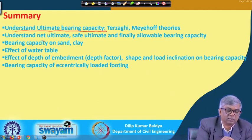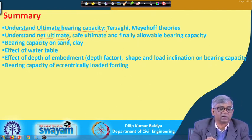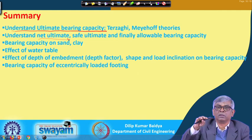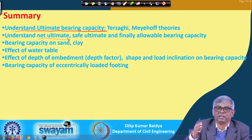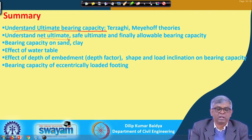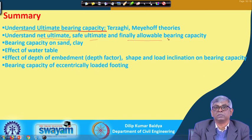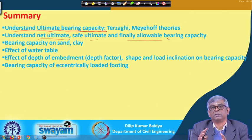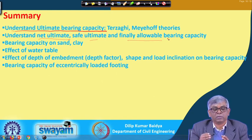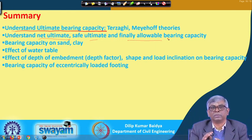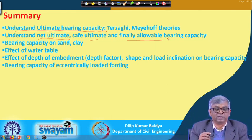You should learn the derivation process conceptually — detailed derivation is not necessary, but understanding is required: how failure takes place below the foundation, what different zones form. You also have to understand different terminologies. Ultimate bearing pressure is when load is slowly increased until failure. Net ultimate is ultimate minus γ·Df. Applying a factor of safety gives the safe ultimate. Adding γ·Df back gives the allowable pressure used for design.